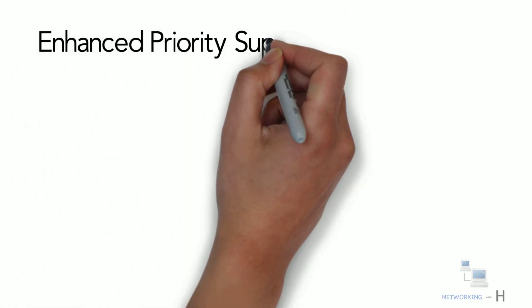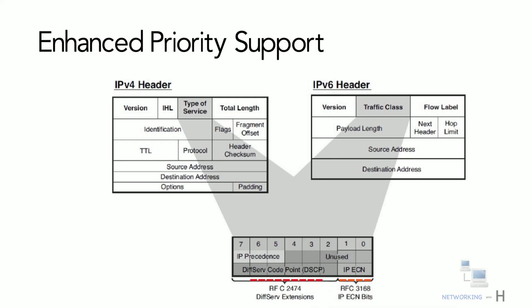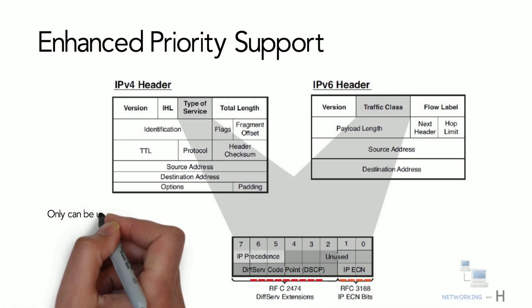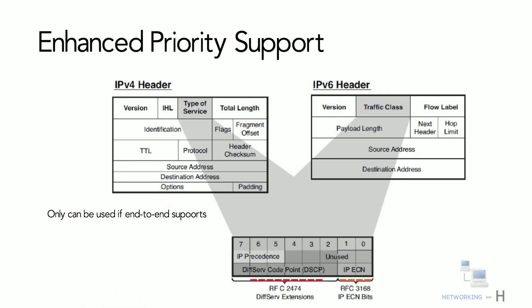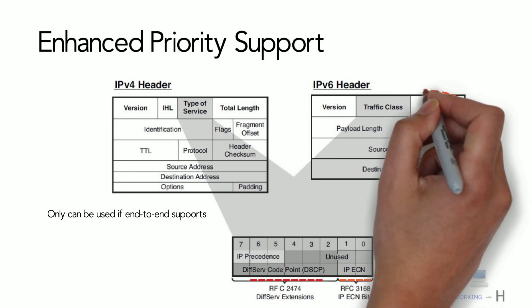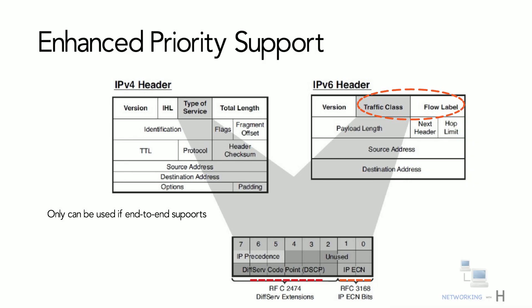Another feature is enhanced priority support. IPv4 uses 6-bit DSCP and 2-bit ECN to provide quality of service, but this could only be used if end-to-end devices — both source and destination — and the underlying network support it. In IPv6, traffic class and flow labels are used to tell the underlying routers how to efficiently process and route the packet.